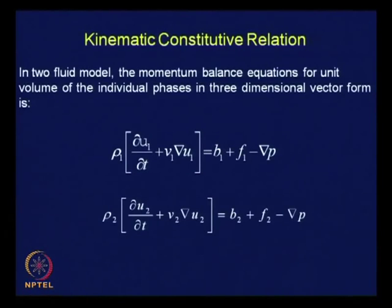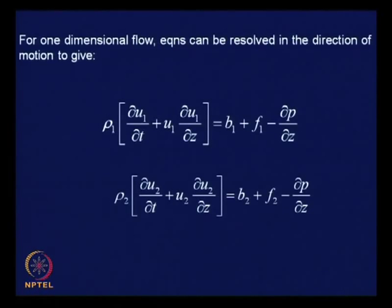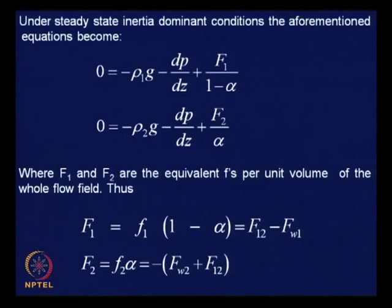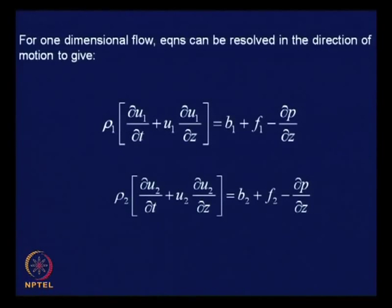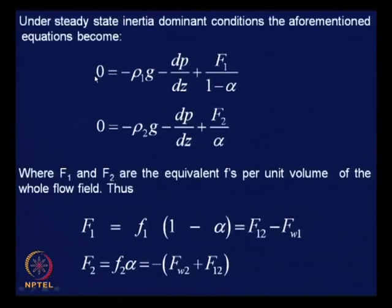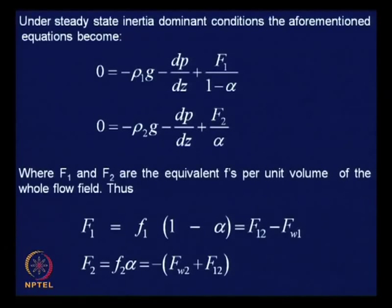Usually we take up the one-dimensional approach. In the one-dimensional approach, the equations reduce to a simpler form. For steady-state conditions under inertia-dominant conditions, the left-hand side disappears, and b₁ becomes minus ρ₁g and b₂ becomes minus ρ₂g, considering the upward direction as positive. They become minus dP/dz in one dimension.